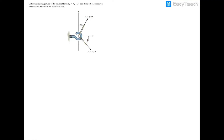We're working with an eyelet screw screwed into a wall with two external forces acting on it. F1 is 250 newtons acting 30 degrees to the right of the y-axis (clockwise from the y-axis), and F2 is 375 newtons at 45 degrees below the positive x-axis. We need to find the resultant force F1 plus F2 and its direction.